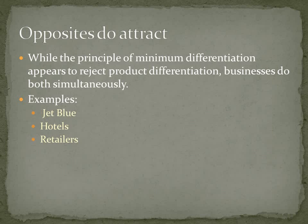Opposites do attract. While the principle of minimum differentiation appears to reject product differentiation, businesses do both simultaneously. JetBlue, the low-cost airline, markets itself as a revolutionary type of airline — cheaper airfare, nicer planes, better locations. As JetBlue tries to differentiate its product from its competitors, it also adopts similar flight schedules and similar service.